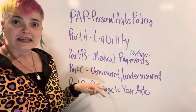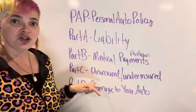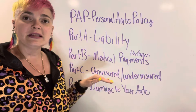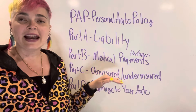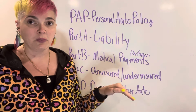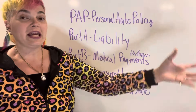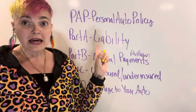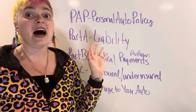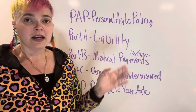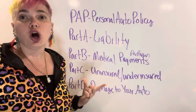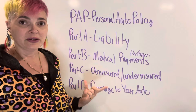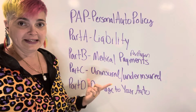Part C is uninsured or underinsured motorist coverage. This is when you are in an accident with someone who hit you and they either have no liability coverage or not enough. You use your own insurance to cover your medical bills, and that is part C.